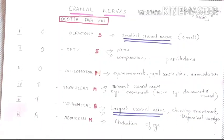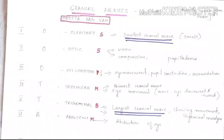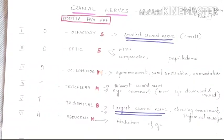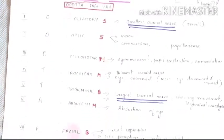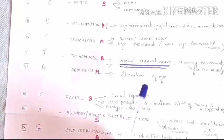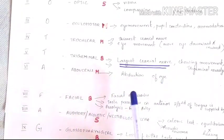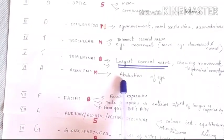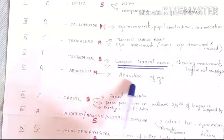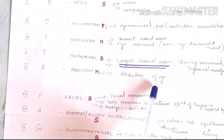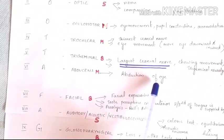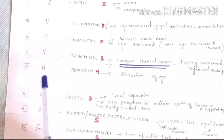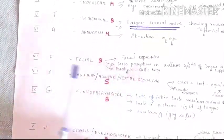The sixth cranial nerve is the abducens nerve. It is a motor nerve that helps in abduction of the eye — it allows movement of the eyes towards the sides.